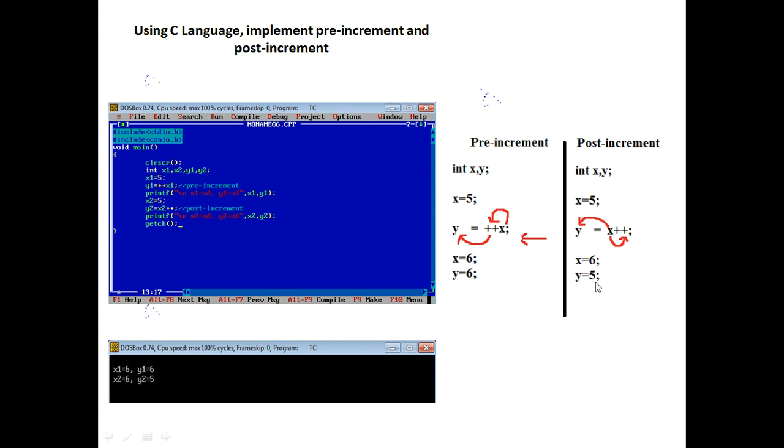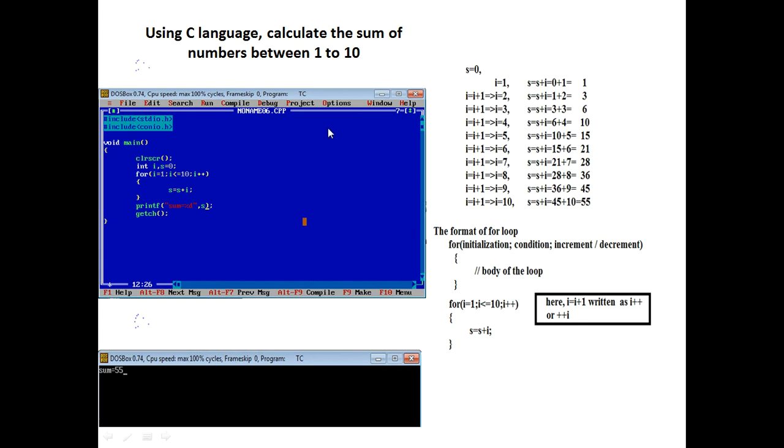For this reason, y takes the previous value of x, and x has the modified value. And also see that the syntax of pre-increment: the ++ operator is used before the variable. And for post-increment, use the ++ operator after the variable x. Now I describe the calculate the sum of numbers between 1 to 10.